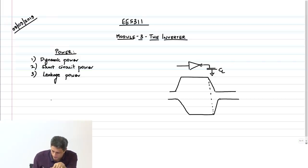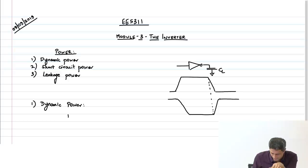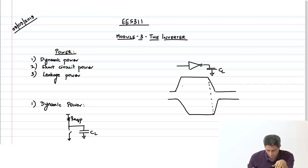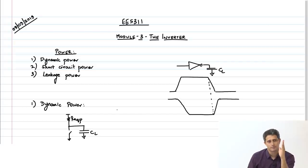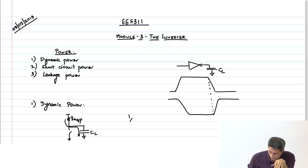For dynamic power, when the capacitor has to charge, there is an R equivalent of the PMOS which is going to charge the capacitor, and of course the NMOS is cut off. The assumption here is that although in reality the input has a finite rise and fall time, here we assume the input rises or falls instantaneously. This means the PMOS is a perfect resistor, the NMOS just cuts off, and all the current from the supply is used to charge the capacitor to VDD.